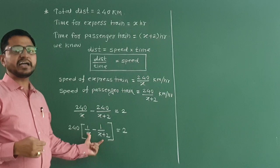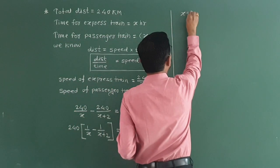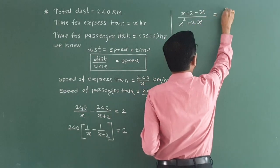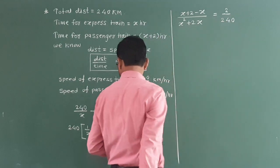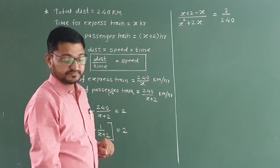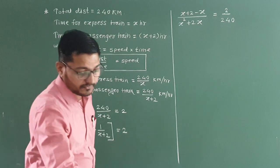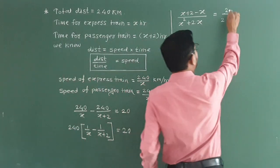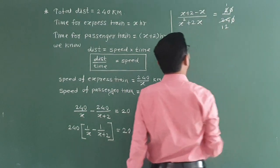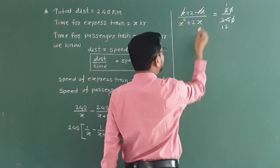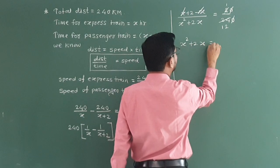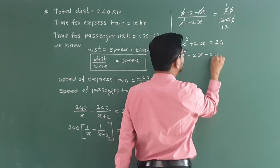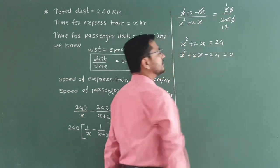By cross multiplication we get: (x plus 2 minus x) divided by (x² plus 2x) equals 2 by 240. After simplification, the x terms cancel. Cross multiplying gives x² plus 2x equals 12 into 2, and we get the quadratic equation: x² plus 2x minus 24 equals 0.